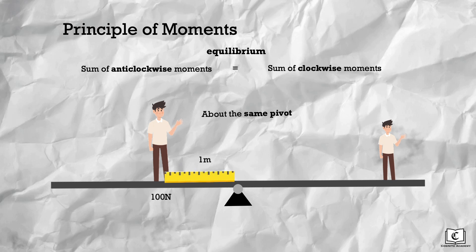Let's say big Jill weighs 100 newtons and is 1 meter away from the pivot. And small Jill weighs 50 newtons and is 2 meters away from the pivot. Anticlockwise moment will be caused by big Jill and the clockwise moment will be caused by small Jill.